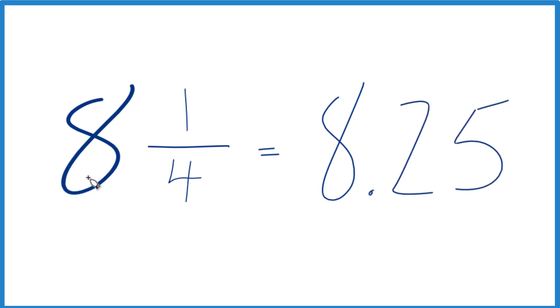If you do, you're done. 8 and 1/4 equals 8.25. The fraction here equals the decimal.